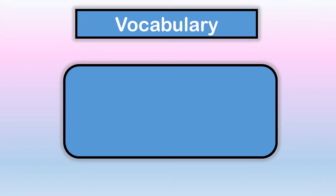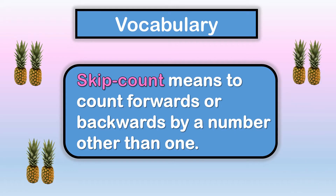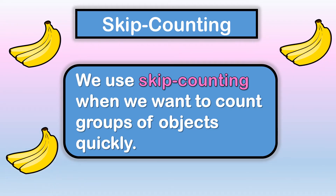First, let's look at the vocabulary. Skip count means to count forwards or backwards by a number other than one. For example: two, four, six, eight. Or: three, six, nine, twelve.